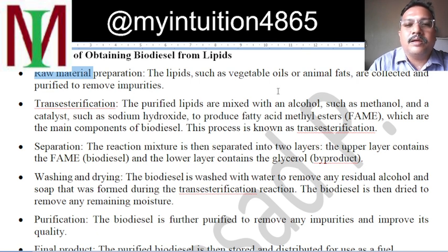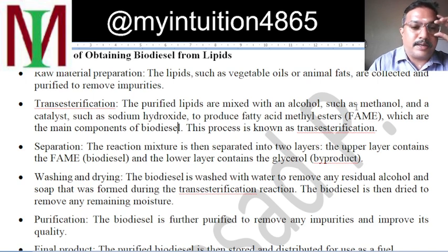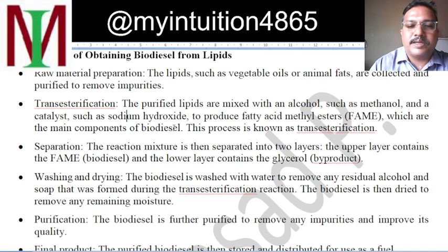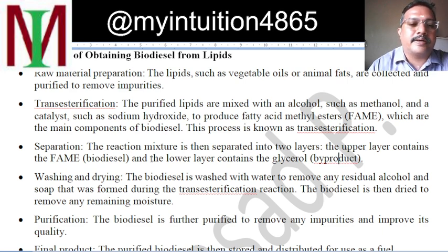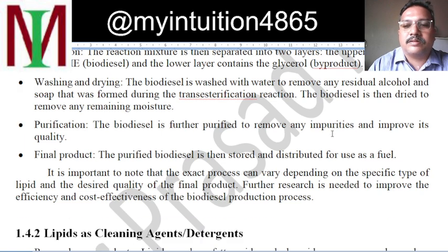The process of obtaining biodiesel from lipids: first, raw material preparation — the lipids are collected, purified, and impurities are removed. Then trans-esterification is performed — the lipids are mixed with alcohol and catalysts such as methanol and sodium hydroxide to form FAME (fatty acid methyl esters), the biodiesel, with glycerol as a by-product. The glycerol and FAME are then separated. The biodiesel is washed, dried, and further purified to remove remaining impurities, and the final product is stored and used as fuel.